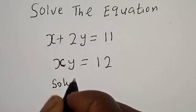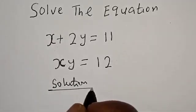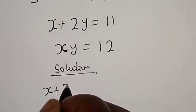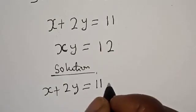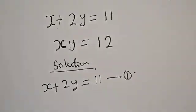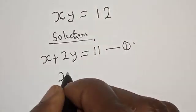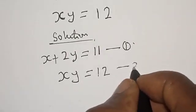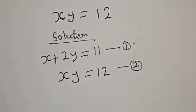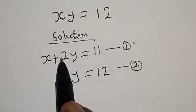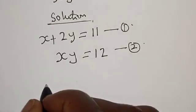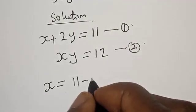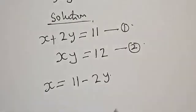Solution. We have the given equations: x plus 2y is equal to 11 — this is equation 1 — and xy is equal to 12 — this is equation 2. Now, from equation 1, let's make x the subject of the formula. Then we have x is equal to 11 minus 2y.